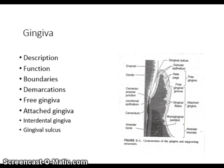The gingiva is the tissue that covers the cervical portions of the teeth and alveolar process of the jaw. It is composed of epithelium and connective tissue. Its function is to provide a covering for the alveolar process of the jaws, as well as a tissue seal around the cervical portion of the teeth. The free gingiva is the unattached portion of the gingiva, also known as the marginal gingiva. The sulcus is the space between the free gingiva and the tooth surface. Attached gingiva tightly connects to the cementum and to the periosteum of the alveolar bone.